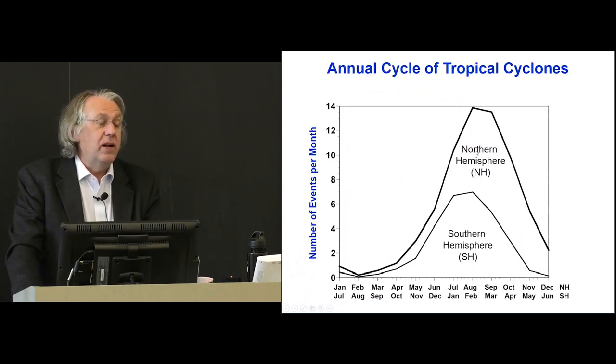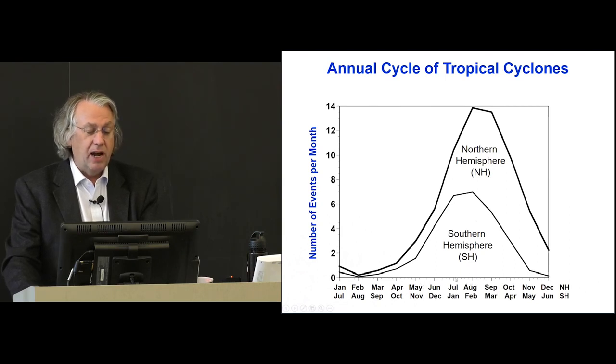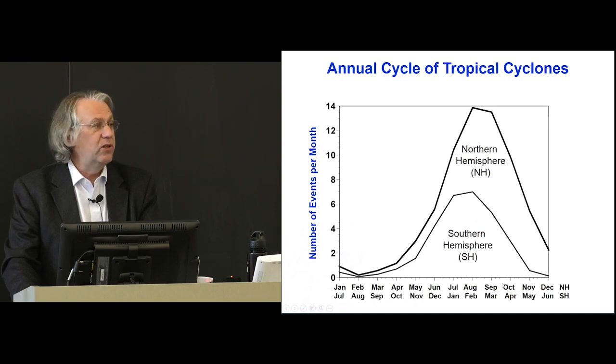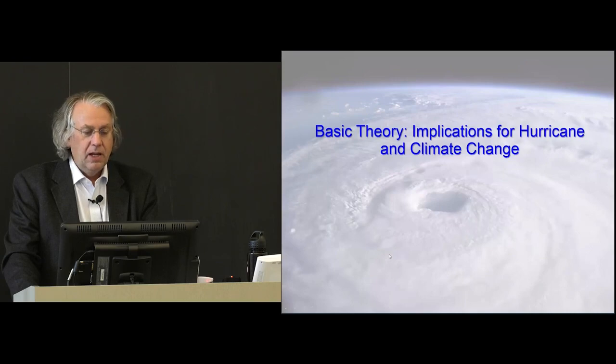They are creatures of the summer and early fall. This is a chart showing the number of storms in the northern hemisphere read off the scale at the top here, January to December, and in the southern hemisphere read off the bottom scale, July to June. And so you can see in both cases, these storms peak in the summer and early fall. There are hardly any tropical cyclones in midwinter.